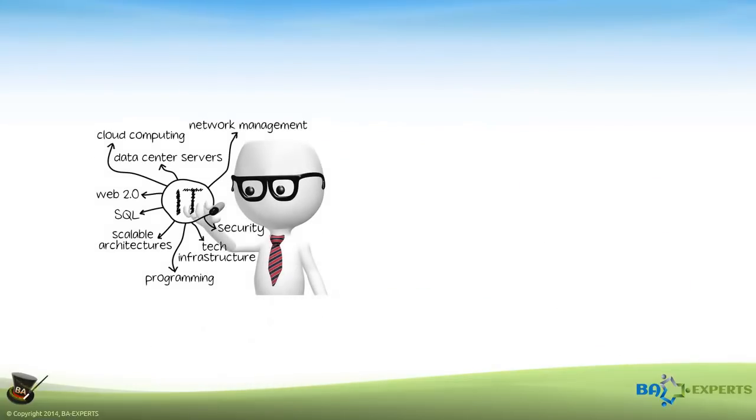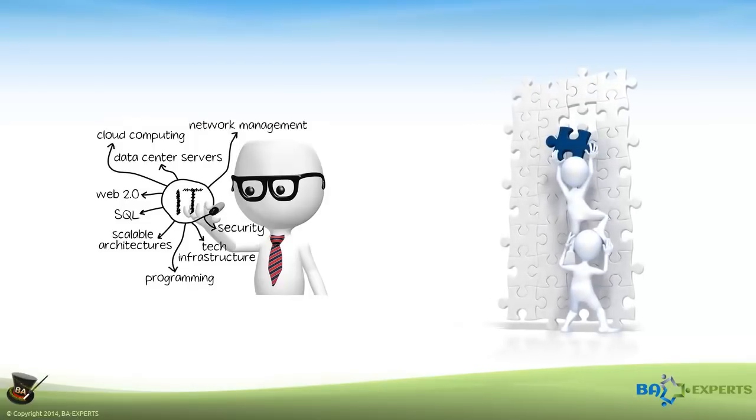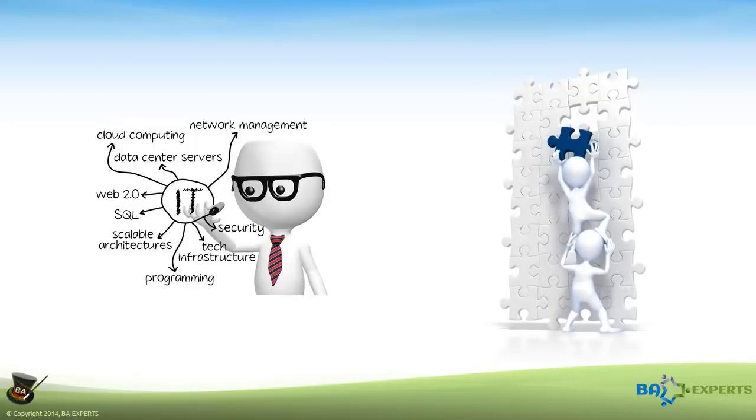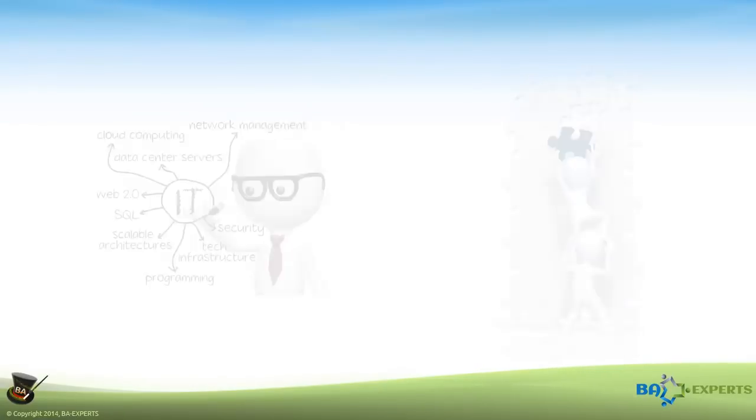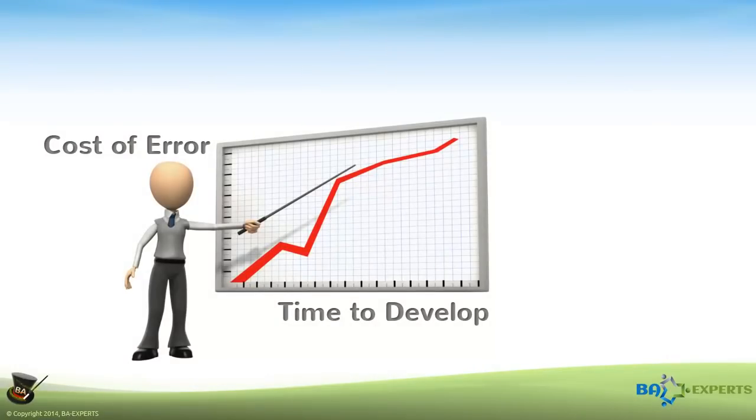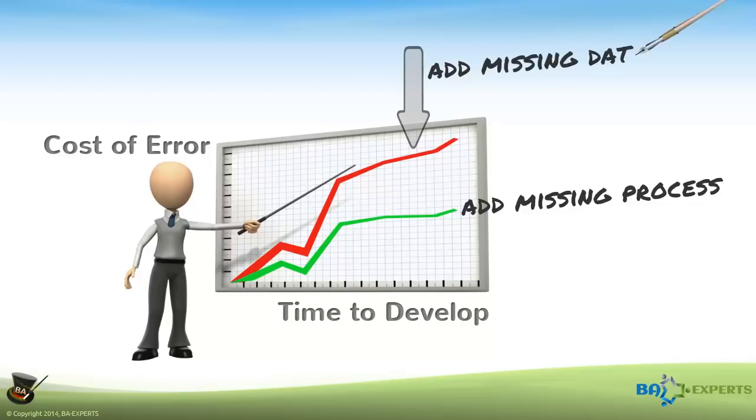IT professionals are generally extremely good at their job, and they'll most likely recognize that they're missing something at some point in the development process. The problem is the timing of the discovery and the related cost when the omission is discovered. Adding a missing process late in the project is a relatively simple step, but missing data often affects a multitude of processes, making it one of the most expensive errors for IT projects.